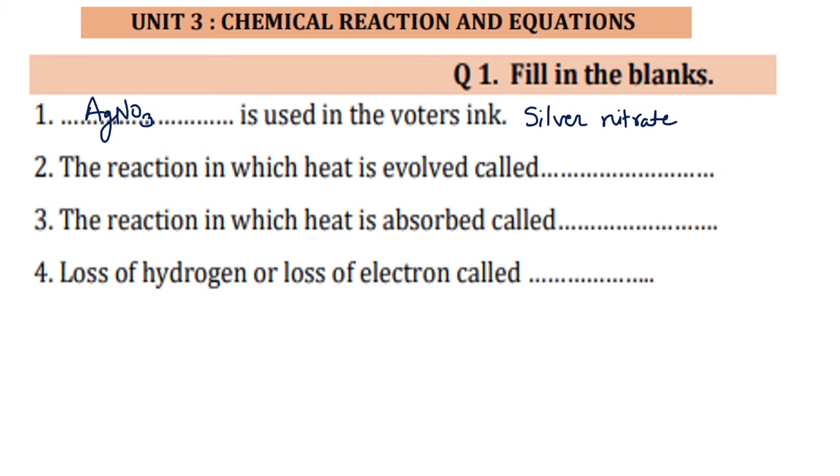The reaction in which heat is evolved is called exothermic. Exit means to go out and that's why heat is evolved. Heat is coming out of that reaction is called as exothermic. And as heat is absorbed in that reaction, temperature decreases, it is called as endothermic.